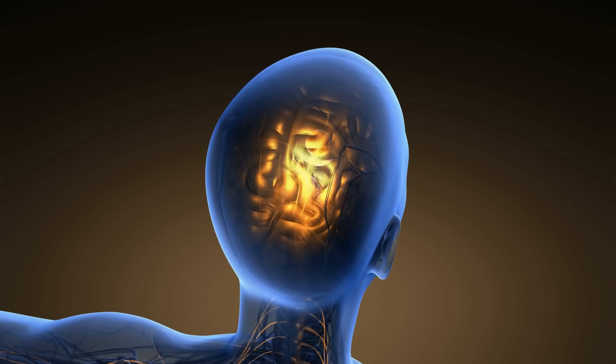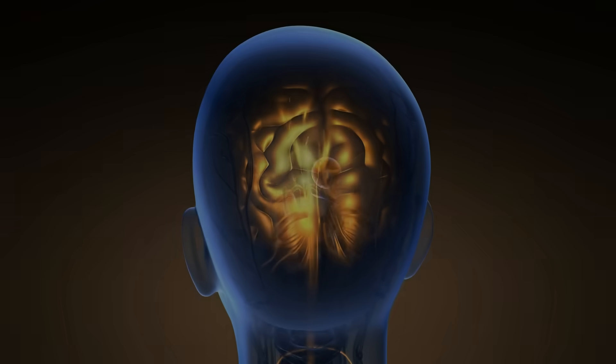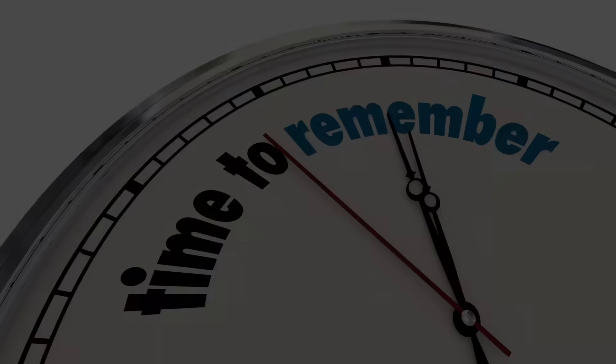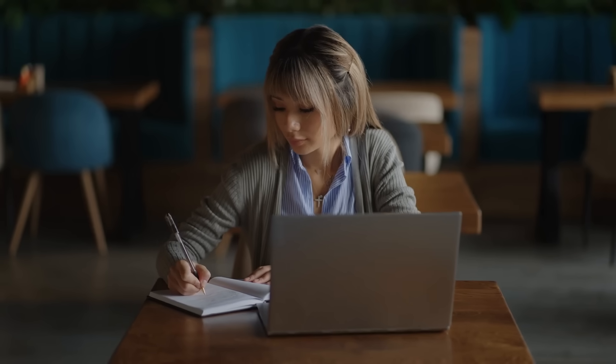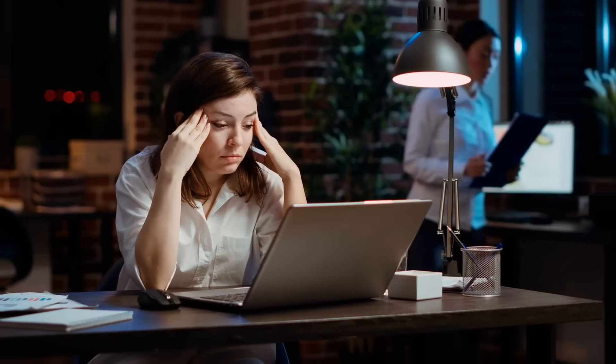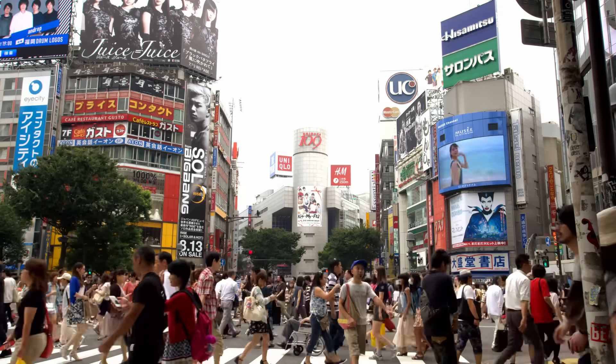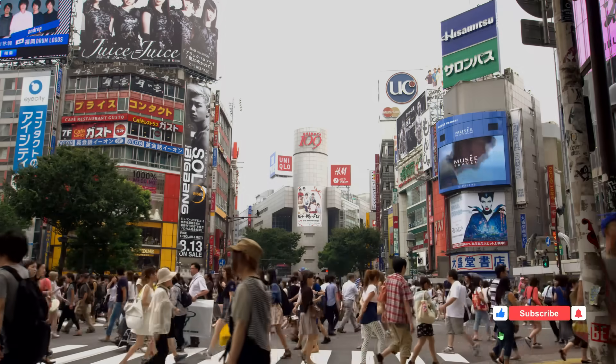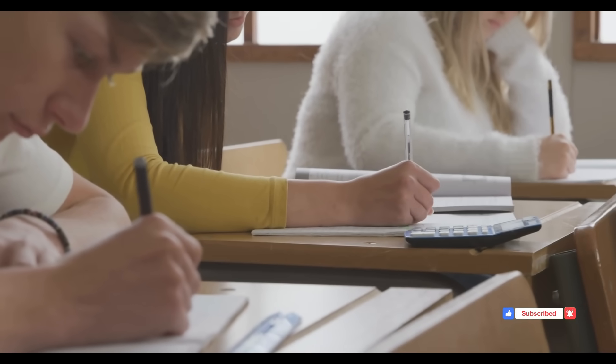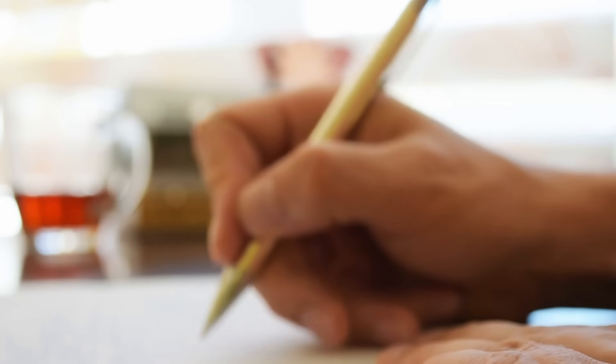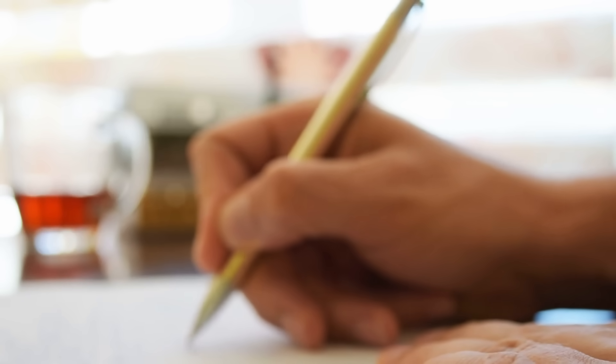Your brain also has something called the reticular activating system. Think of it as your neural attention filter. It decides what information is important enough to actually remember. When you engage your hand, your eyes, and your thinking simultaneously, you're sending a powerful message to this system: pay attention, this matters, store this. A study from Tokyo University proved the impact. Students who wrote notes by hand had 34% better recall one week later compared to those who typed. Not 5% better, not 10%. 34%.